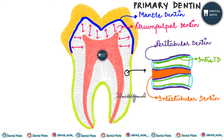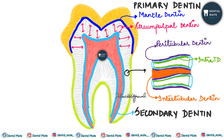Mantle dentine and circumpulpal dentine are types of primary dentine, which is formed before root completion. Secondary dentine is a narrow band of dentine bordering the pulp, formed after root completion when the tooth is erupted and functional. Secondary dentine can be regular or irregular.